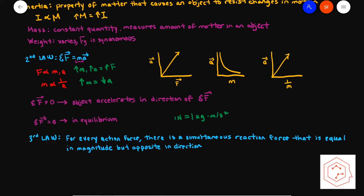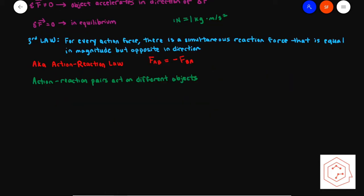Last but not least, Newton's third law states that for every action force, there is a simultaneous reaction force equal in magnitude but opposite in direction. This is also known as the action-reaction law, which states that the force of A on B is equal to the negative of the force of B on object A. It's important to note that action-reaction pairs act on different objects.